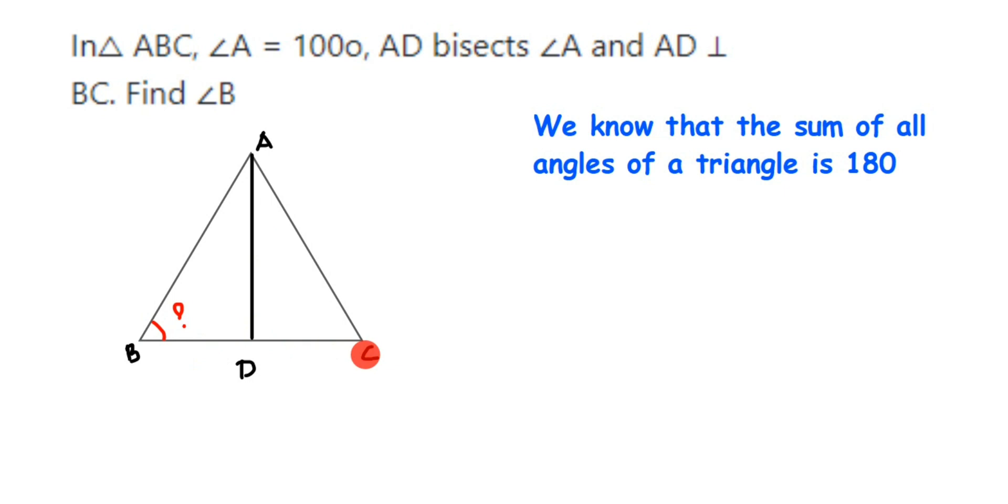this angle will be 90 degrees, and this will also be 90 degrees. Both will be 90 degrees. And we're given angle A is 100 degrees, meaning this whole angle is 100 degrees. Now since we're